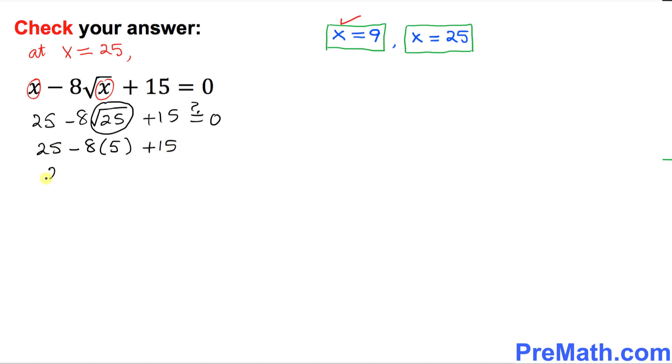So this is 25 minus 40 plus 15. That is going to give you 0 on the left-hand side. And we know 0 is on the right side as well. My question is, is this statement true? Yes, indeed, this is true. So that means our x equals 25 is also a good solution.